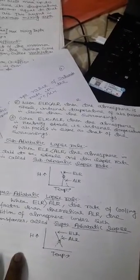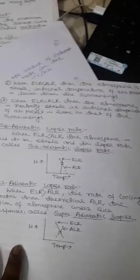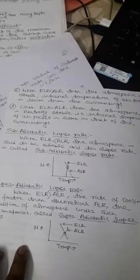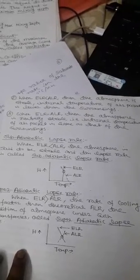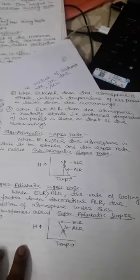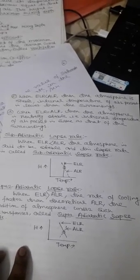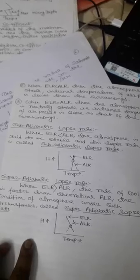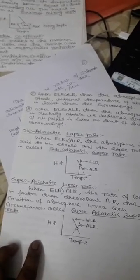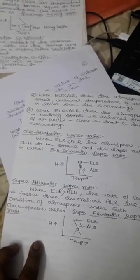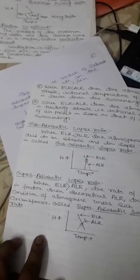Second, when ELR is less than ALR, the atmosphere is stable because the internal temperature of the air packet is lower than that of the surroundings. Third, when ELR equals ALR, the atmosphere is neutrally stable — the internal temperature of the air packet is the same as that of the surroundings.